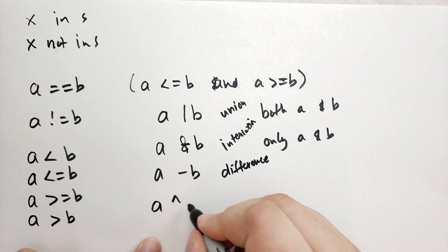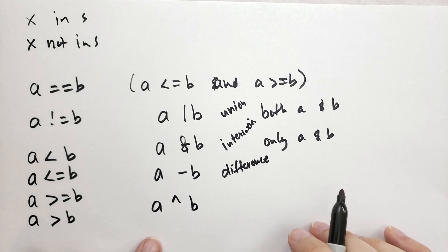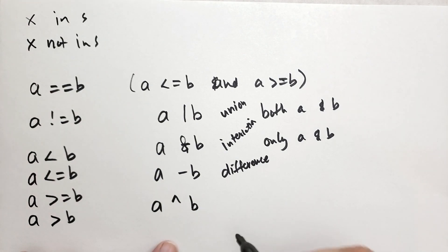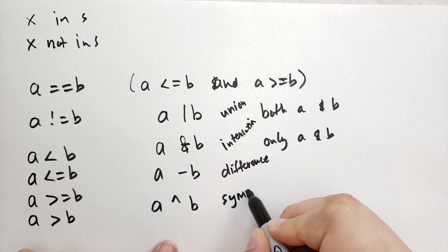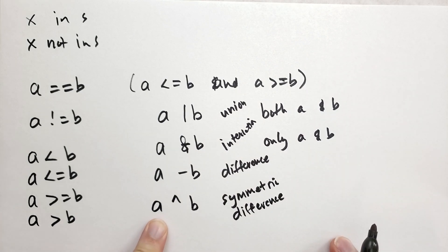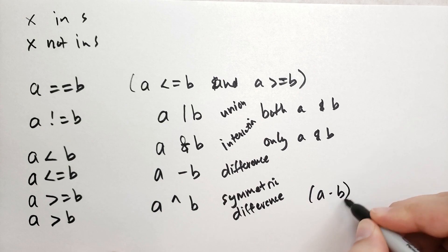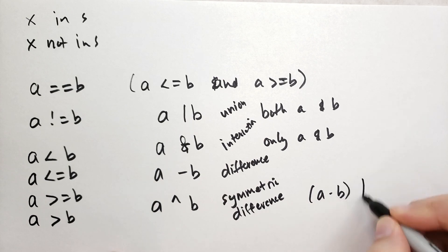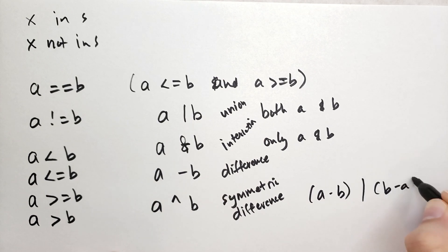OK, and then we have a carrot b. OK, this might be exclusive or in the binary environment. This is the symmetric difference. In other words, this is all the elements in a that are not found in b and all the elements of b that are not found in a. So a way to think of this is this is a minus b union with b minus a.